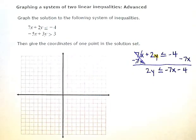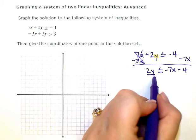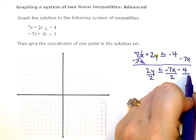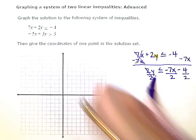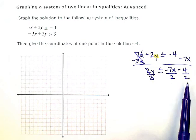Now the last step here is to divide out the coefficient. So I need to divide everything by 2. And then I'm just going to simplify. Now since I divided by a positive 2, I do not have to flip my sign.